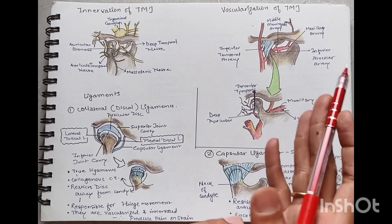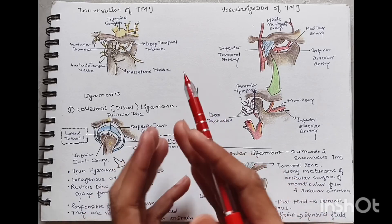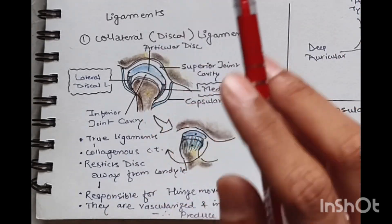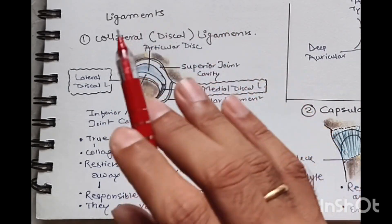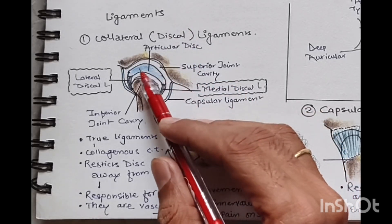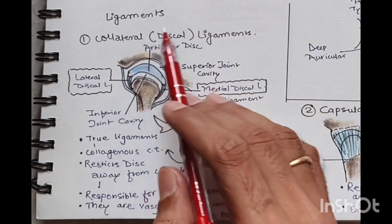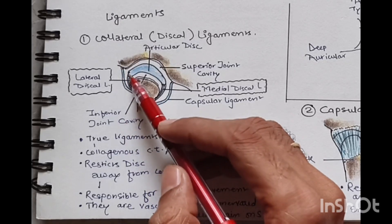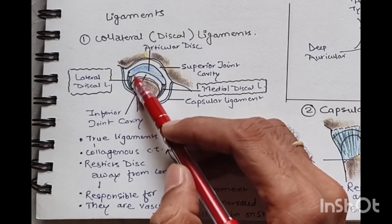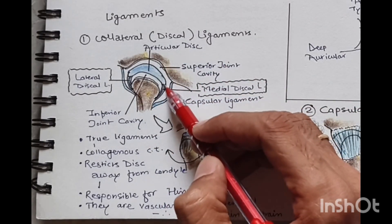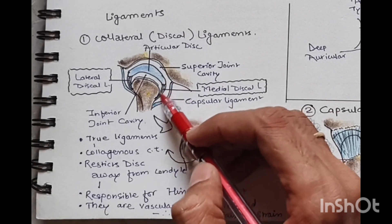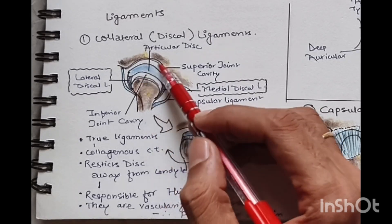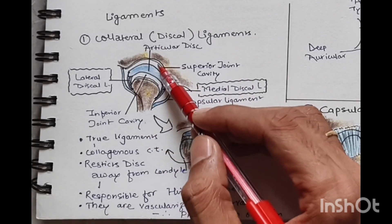The TMJ has five ligaments: three primary and two accessory. The first primary ligament is the collateral ligament, also called the discal ligament, because it attaches the disc to the condyle. It consists of the lateral discal ligament — attaching the lateral part of the disc to the lateral part of the condyle — and the medial discal ligament, attaching the medial end of the disc to the medial part of the condyle. Together they form the inferior cavity of the joint.